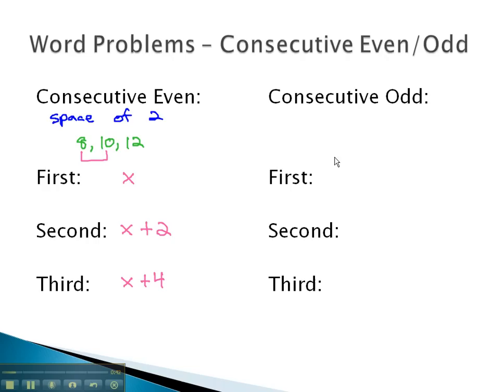Interestingly, when we look at odd numbers, consecutive odd numbers also have a space of 2 between them. For example, 7, 9, and 11 also have that same space of 2.